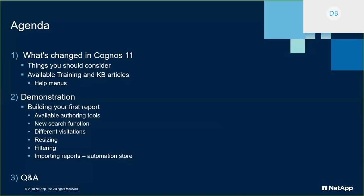This time is for the folks on the call. I'm hopefully going to cover some of the new navigations and capabilities inside Cognos 11 to kind of get you started, and then we'll drill down into future webinars to give you even more context. First I'm going to go through what's changed in Cognos 11, talk about some things you should consider if you haven't migrated to the latest releases, talk about available training and KB articles. I'm going to jump right into a demonstration, start showing you how to build your first report, the new look and feel, the available authoring tools, the new search function capabilities, the different visualizations, resizing, filtering capabilities, and even walk you through an example of how to import reports. Then I'll wrap it up with any Q&A.